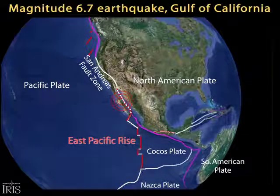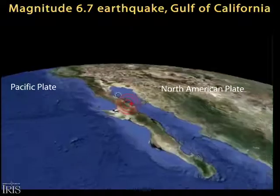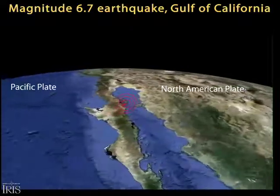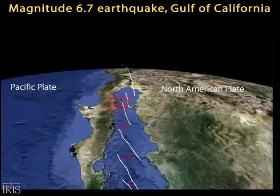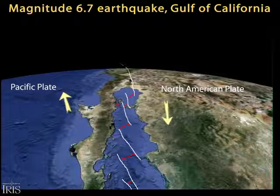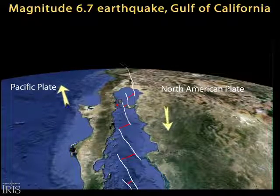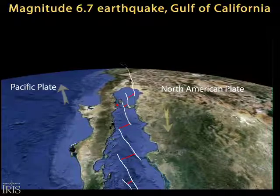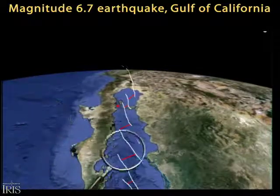Extension and strike-slip faulting are causing Baja California to separate away from mainland Mexico, thereby opening the Gulf of California. It is made up of right-lateral strike-slip motion with stair-stepping spreading ridges connected by classic transform faults.